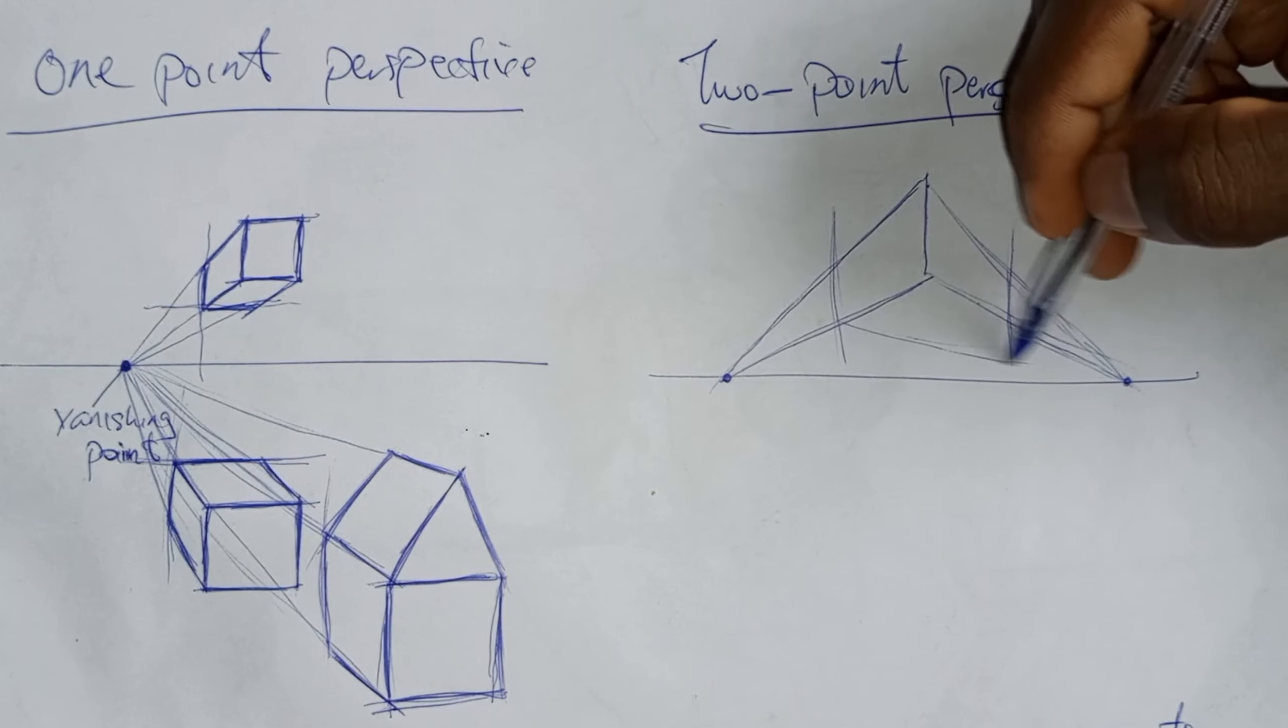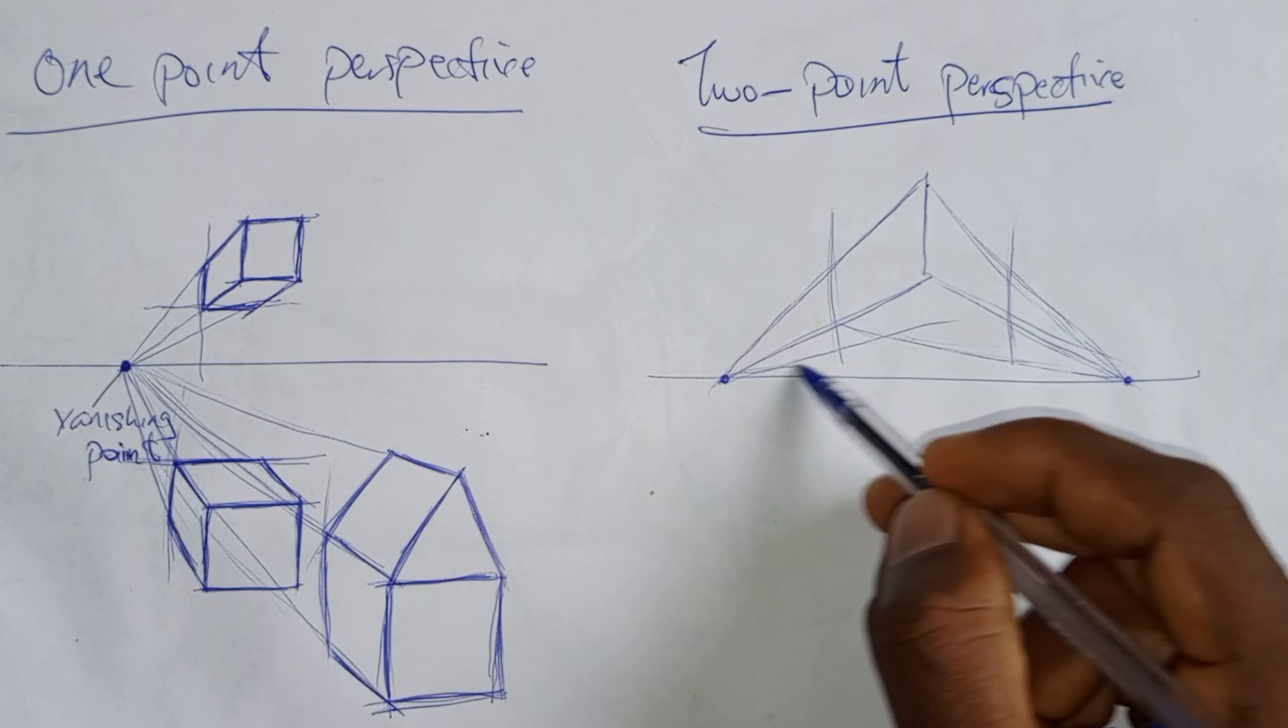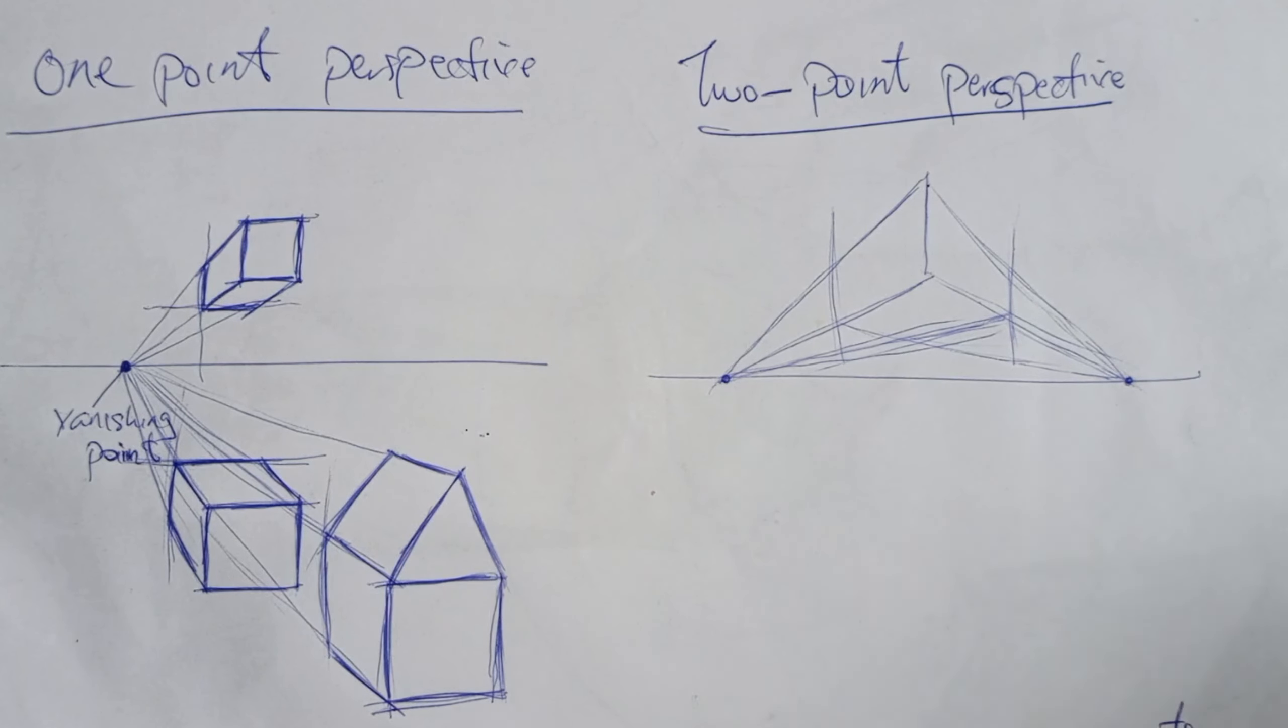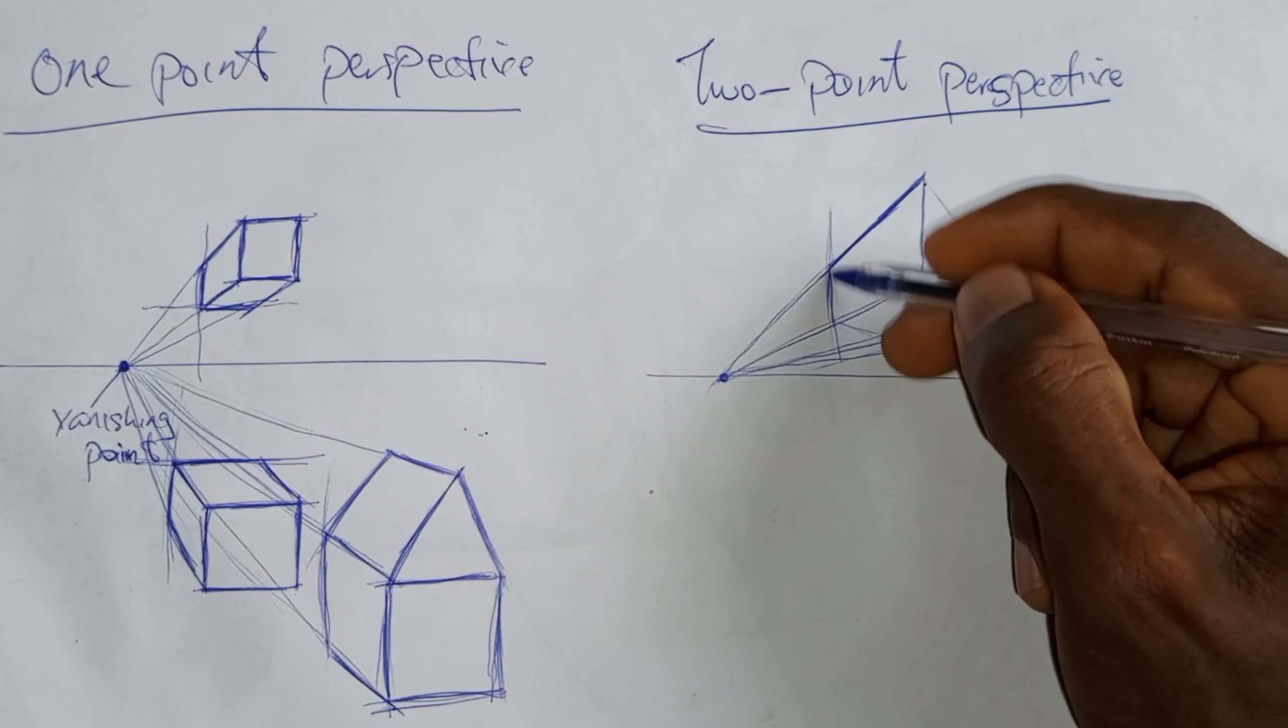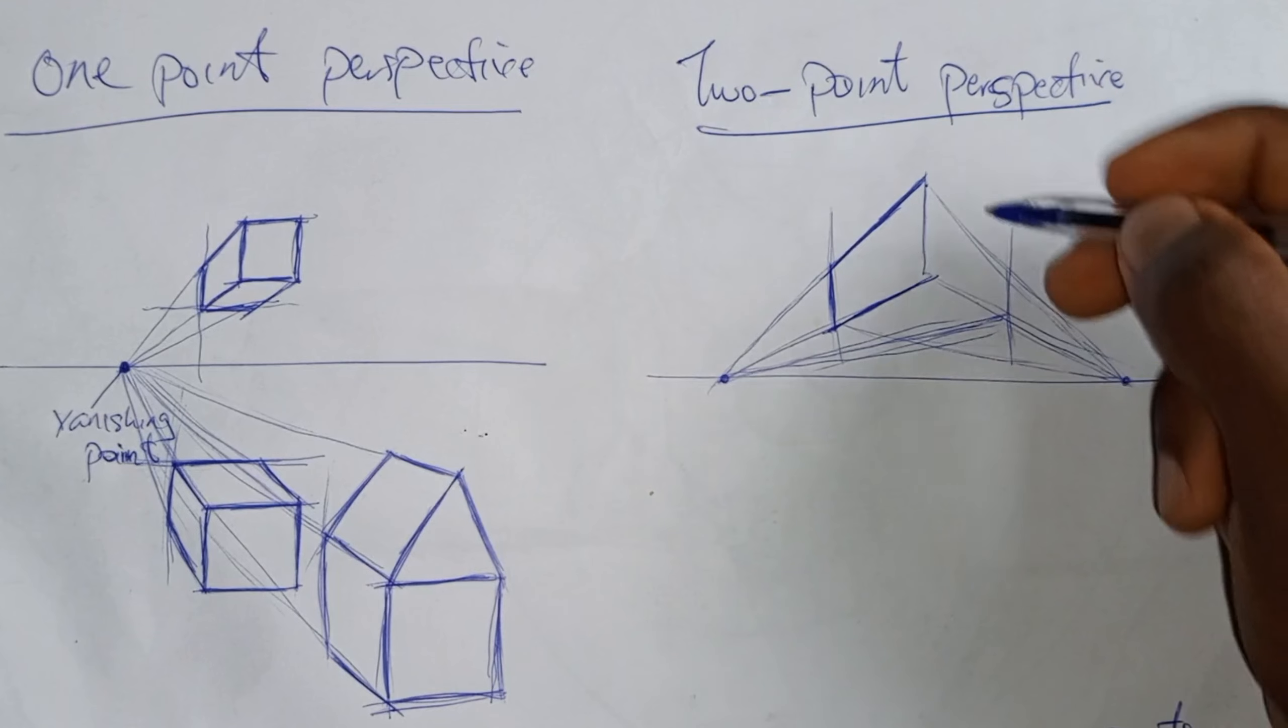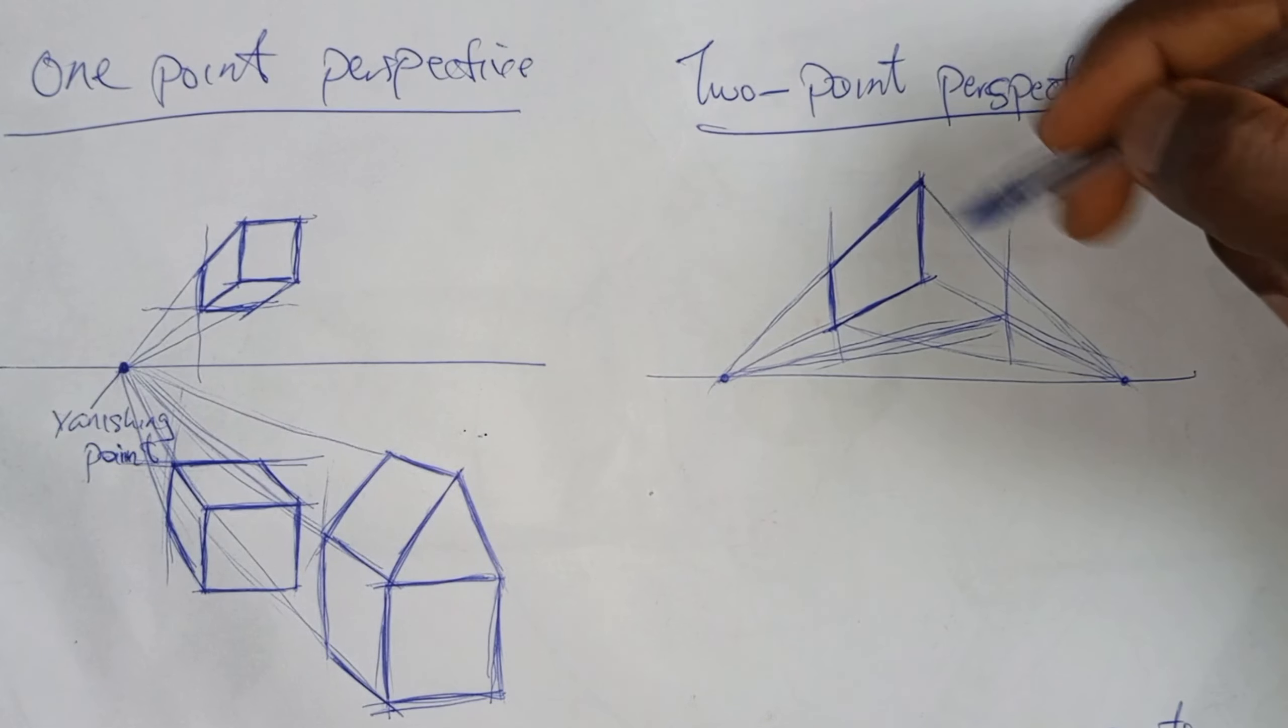Now that we have covered the basics of one-point and two-point perspective, we'll talk about how to apply these concepts to a ballpoint pen drawing in our next tutorial. One of the key things to remember is to use gentle, soft lines when drawing your perspective lines. This will help create a sense of subtleness and realism in your drawing.